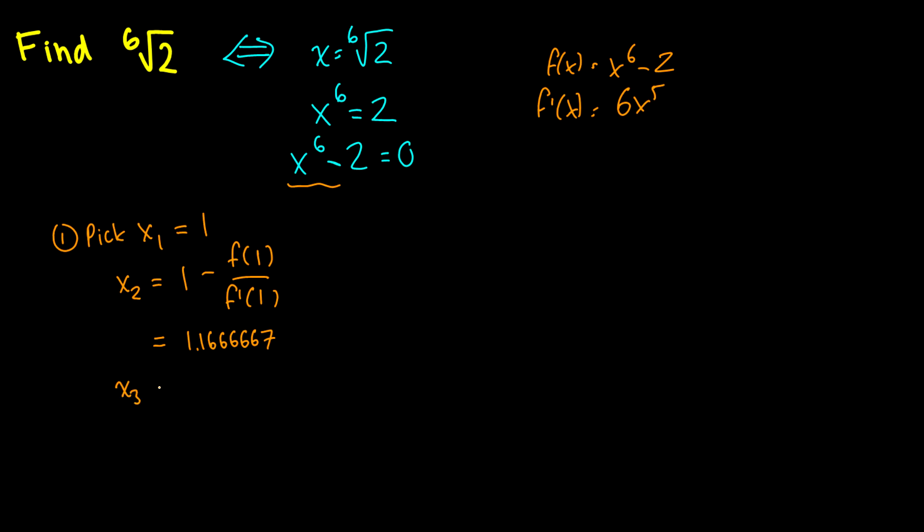So now our x_3 is going to be equal to x_2 minus f(x_2) over f'(x_2). Now it gets a little bit messier here, especially when I don't have a calculator on me, because we have x_2 is equal to 1.1666667, so that's going to be 1.1666667 minus f(1.1666667) divided by f'(1.1666667).